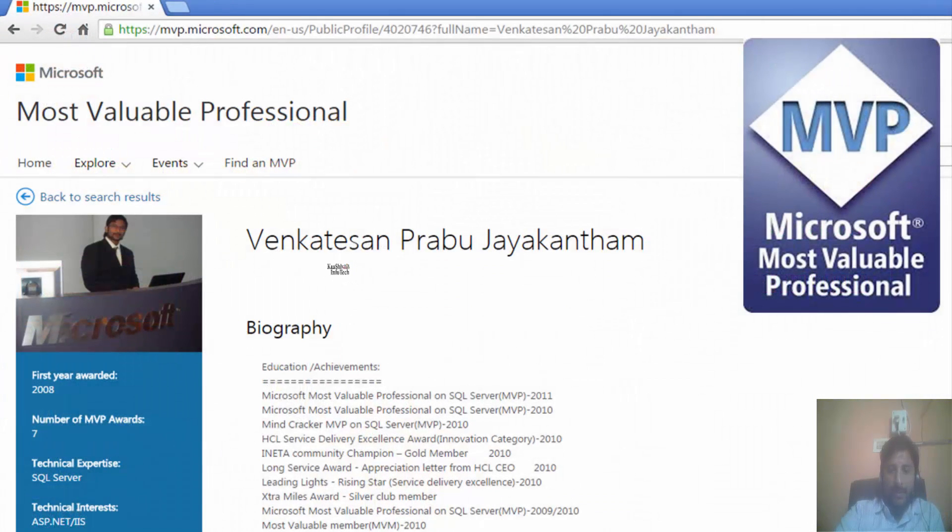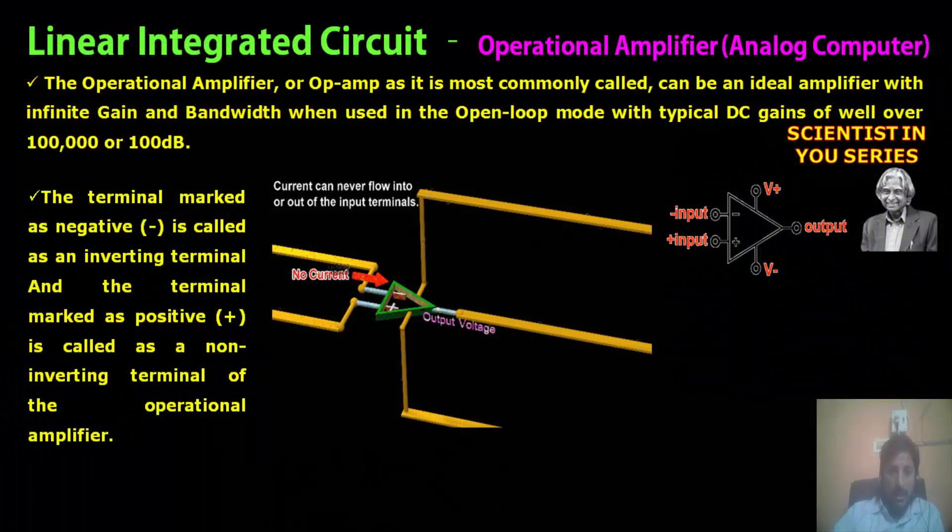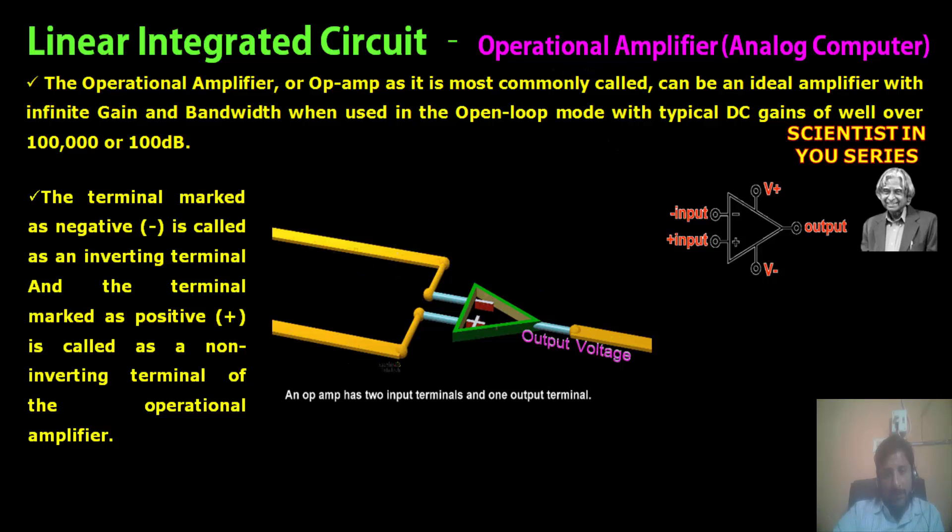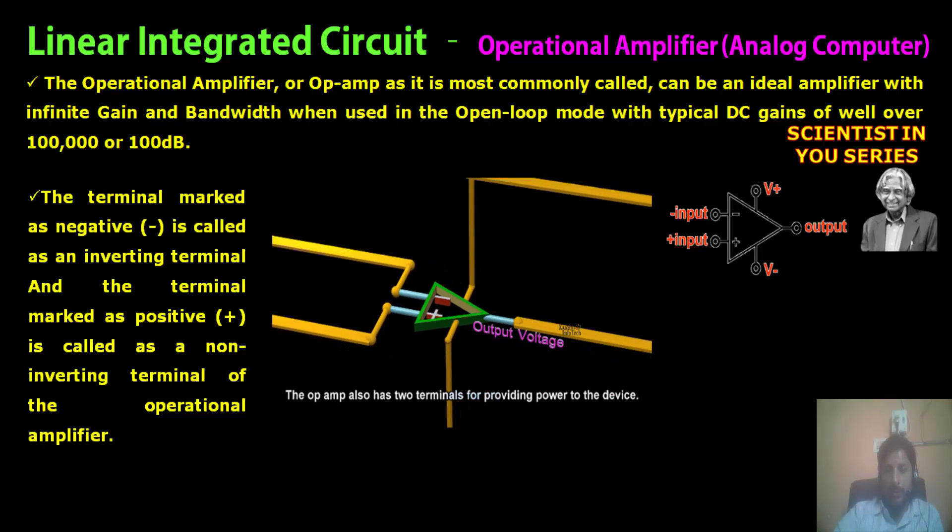My name is Venkat and I am a Microsoft Most Valuable Professional. If you talk about linear integrated circuit, the first one is operational amplifier. Operational amplifier will have two terminals with one output terminal. These are all called as input terminals and this one is output terminal.